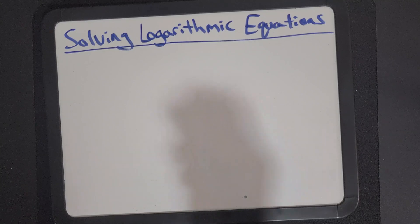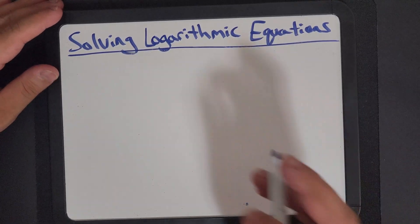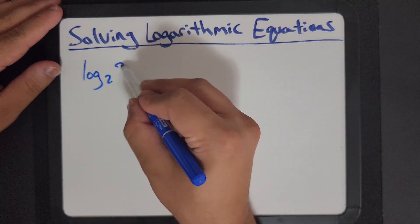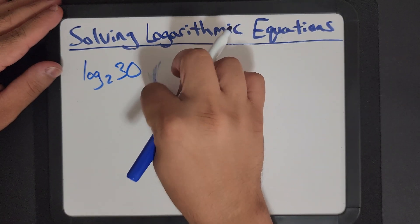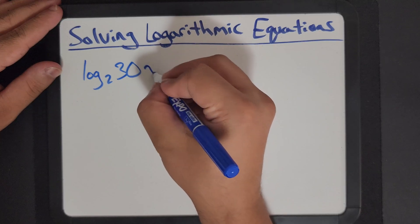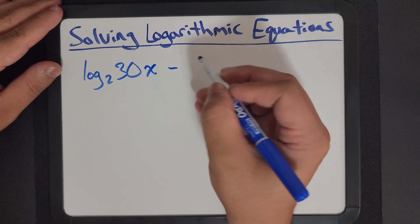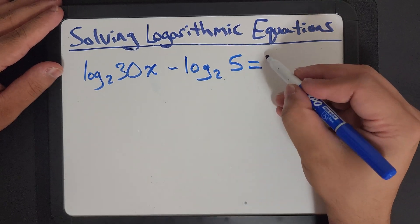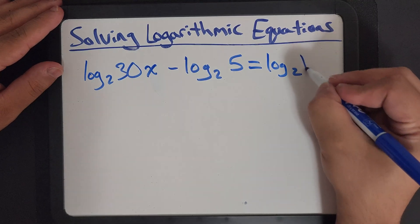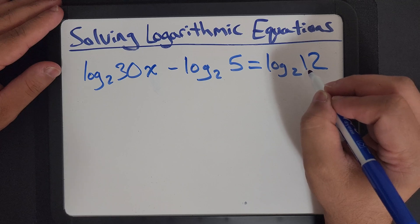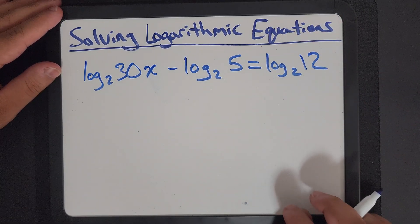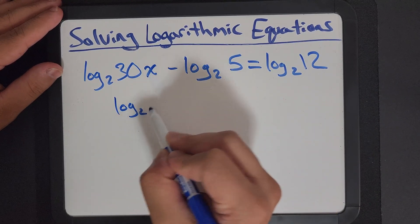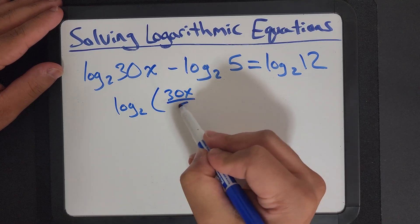Let's do another one. Let's say we have log base 2 of 30x minus log base 2 of 5 equals log base 2 of 12.